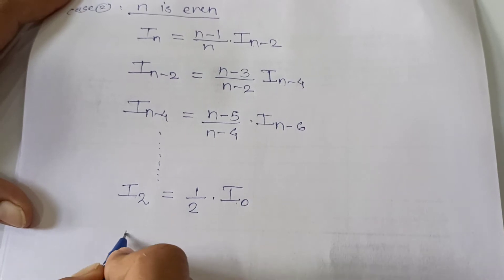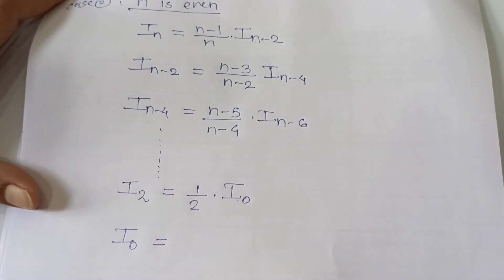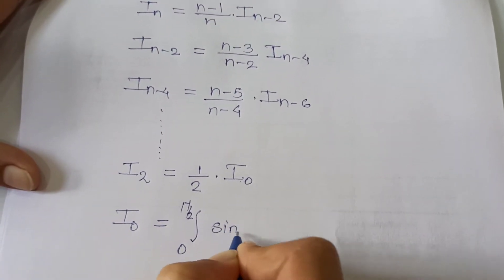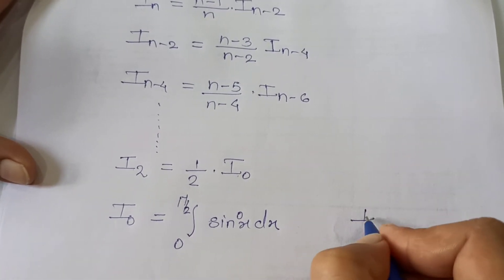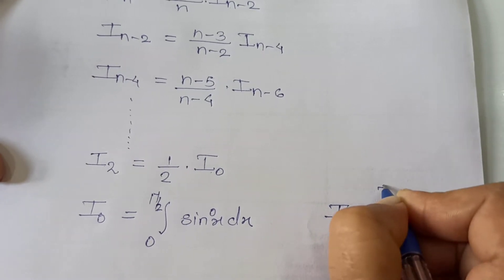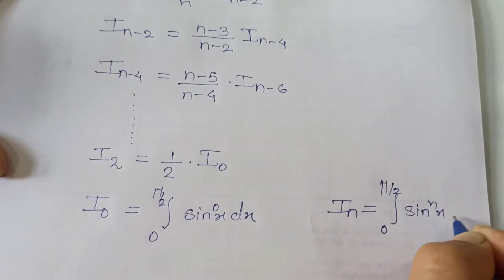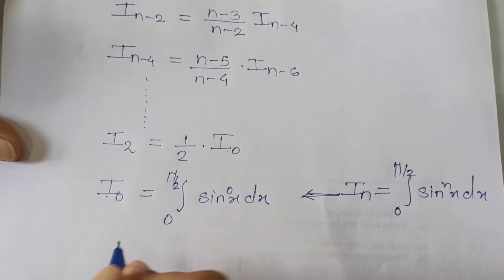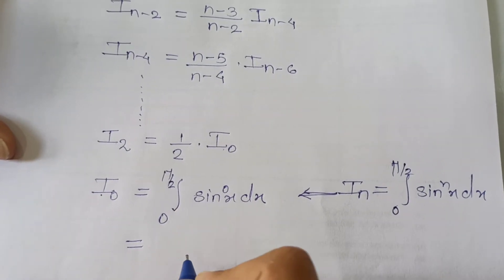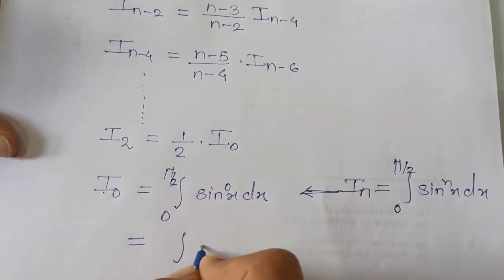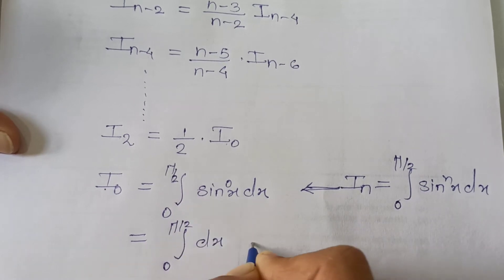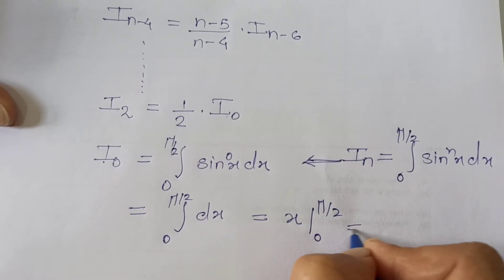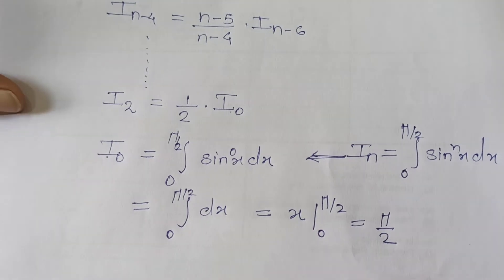To evaluate I₂ we need I₀. In our notation, I₀ is the integration of sin raised to 0 of x dx from 0 to pi by 2. Since sin raised to 0 is 1, this is just the integration of dx from 0 to pi by 2, which equals [x] from 0 to pi by 2, giving I₀ = pi by 2.